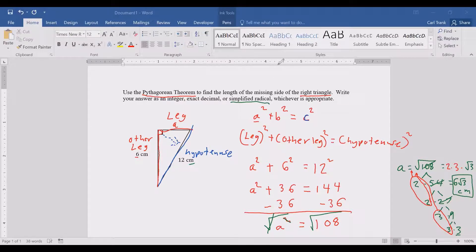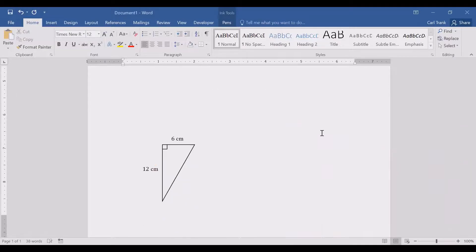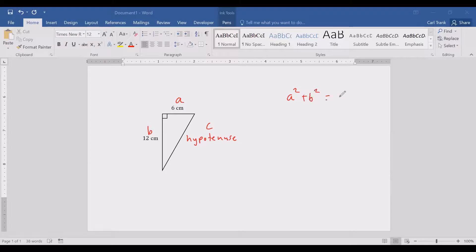So this first problem that we did asked you to find a leg. We were missing a leg. This next problem is going to ask us to find a different side of the triangle. Now notice the 6 and the 12 are the same but now it's the hypotenuse that we don't know. If we use the letters A and B to represent the legs of the triangle and C to represent the hypotenuse of the triangle then A squared plus B squared equals C squared is what the Pythagorean theorem says.